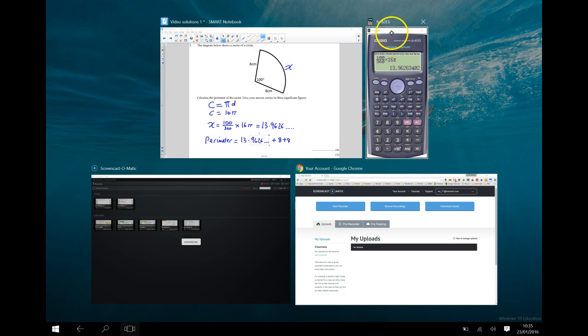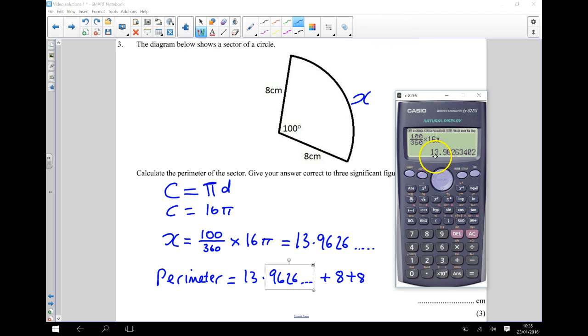So, again, I can grab my calculator. And to this value here, I'm going to do my answer that I had before, because I don't want to round it until I get to the end. So I'm going to add on plus 8, plus 8, or just plus 16, and that should tell me the perimeter.